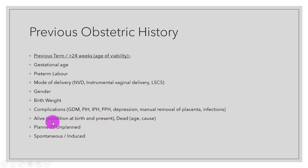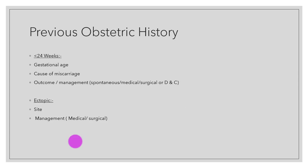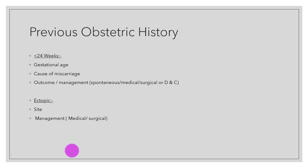If children are alive, we ask about their condition at birth and present condition. If they are deceased, we ask at what age they died and the cause. We also ask whether previous pregnancies were planned or unplanned, and whether spontaneous or induction was done. The second part of previous obstetric history covers children born before 24 weeks — asking gestational age, cause of miscarriage, and management such as D&C. We ask about ectopic pregnancies, including site and management.